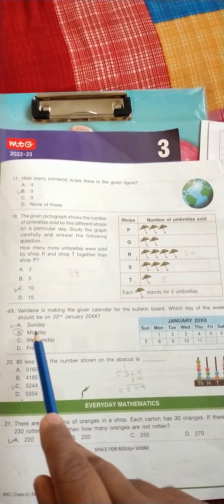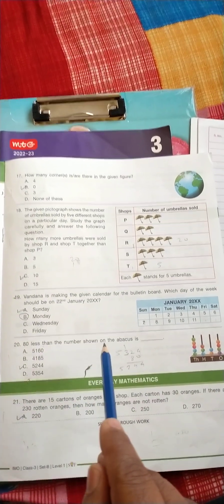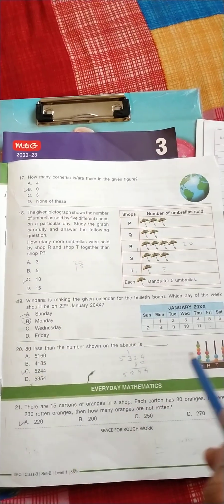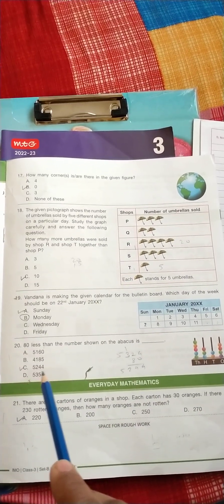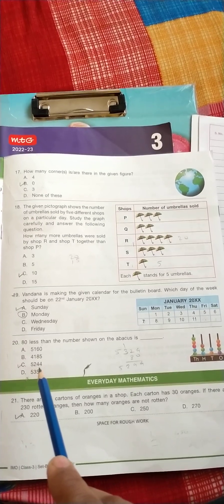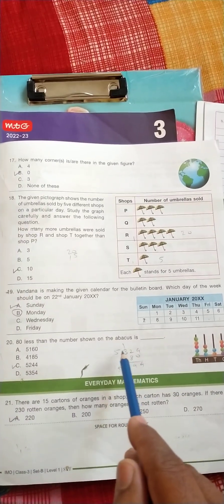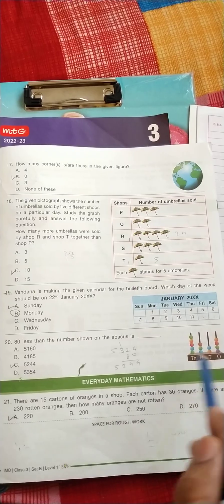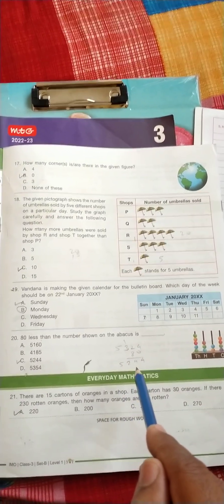18 less than the number shown on the abacus is - so the correct answer is 5244. Just simple minus here, the abacus number is 5324 minus 18, so the correct answer is 5244.